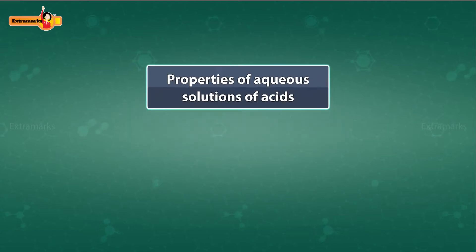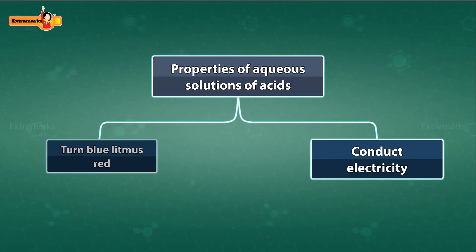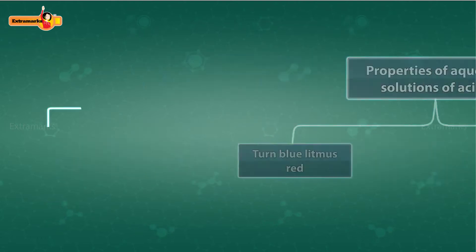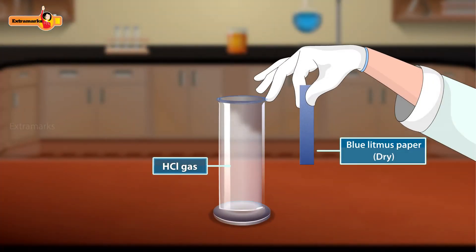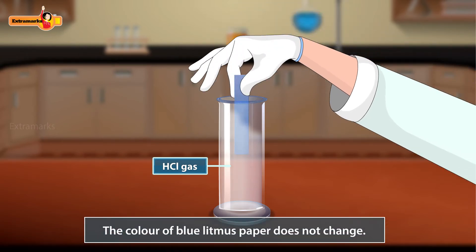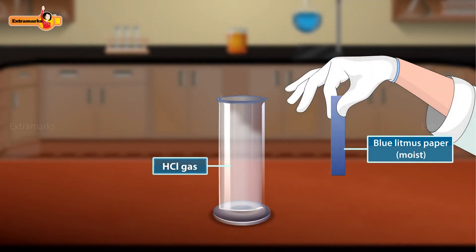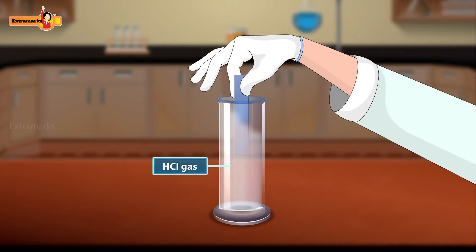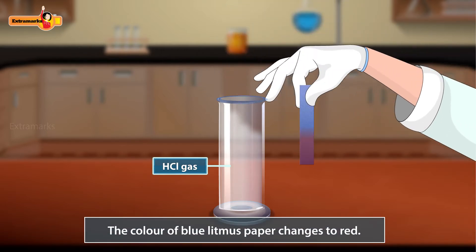Acidic solutions turn blue litmus red and they conduct electricity. Remember, acids do not dissociate in gaseous state. That is the reason when a dry blue litmus paper is dipped in a jar filled with dry HCl gas, the color of blue litmus paper does not change. But when a moist blue litmus paper is dipped in the same jar, the color changes to red, because now it will furnish H⁺ ions.